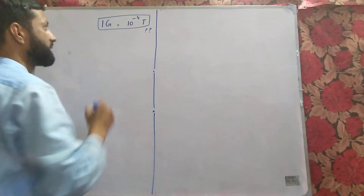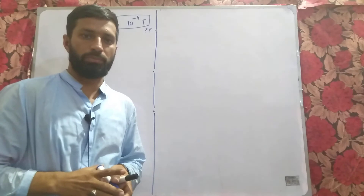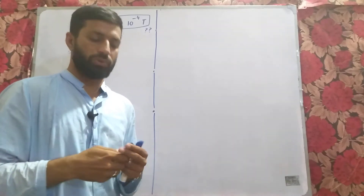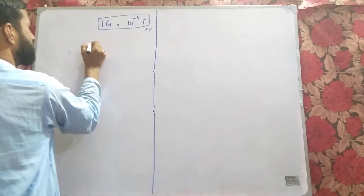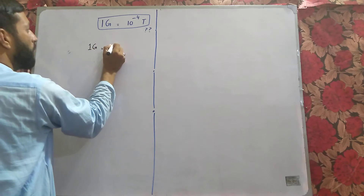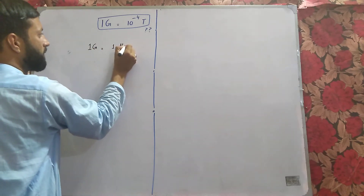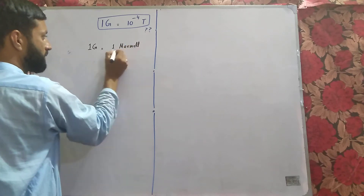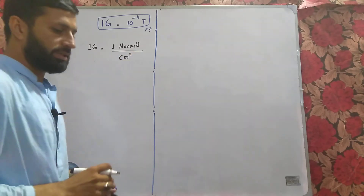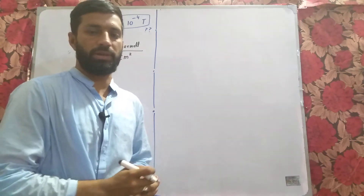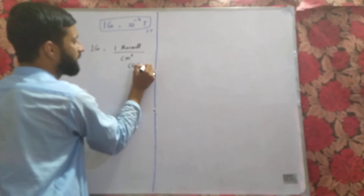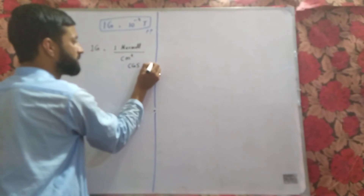One Gauss is equal to one Maxwell per centimeter square. This is the definition in the CGS system, where CGS means centimeter, gram, and second. So one Gauss equals one Maxwell per centimeter square in CGS units.